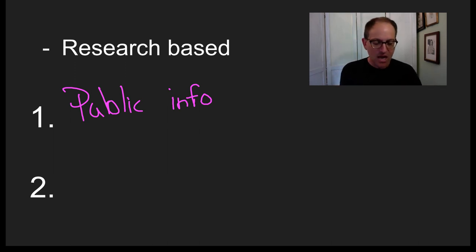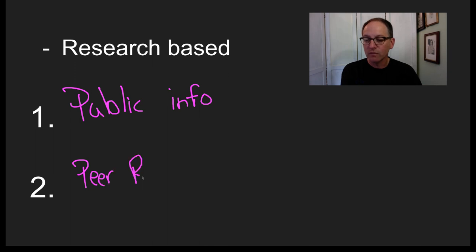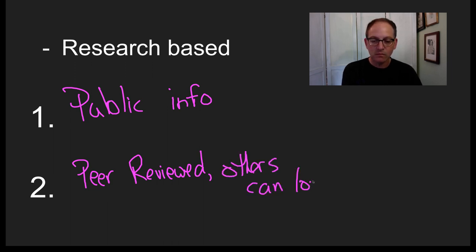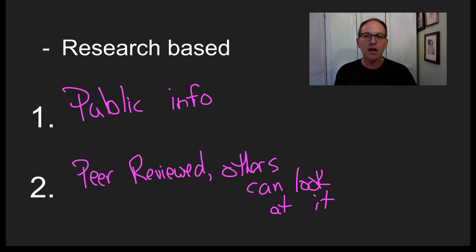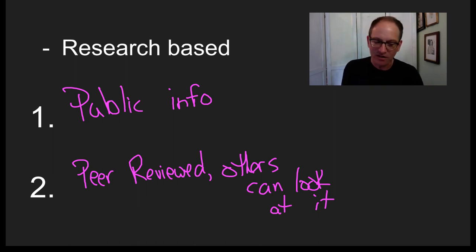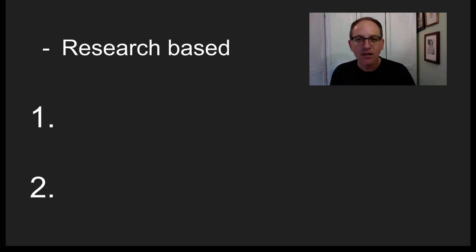The most important thing is that research has to be peer-reviewed — in other words, others can look at it. It's got to be brought out into the public so everyone gets to see what you've done. Think of it like opening a restaurant. If you say you have the best food in the world but you never let anybody taste it, how do you know? You've got to open it up for critics to see. It's the same thing when talking about data and peer-reviewed information, because if you don't, bad things can happen.